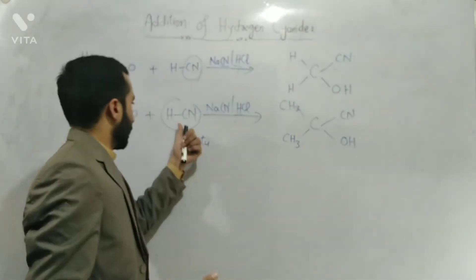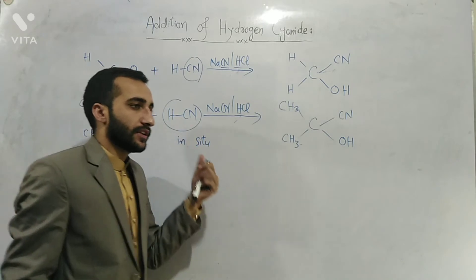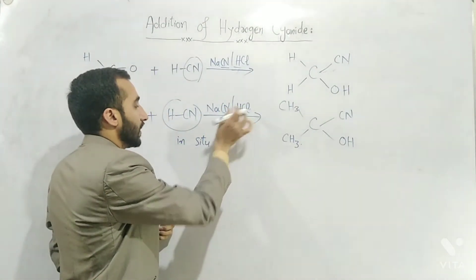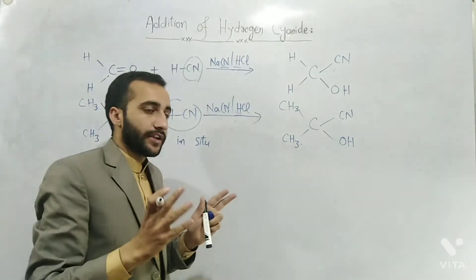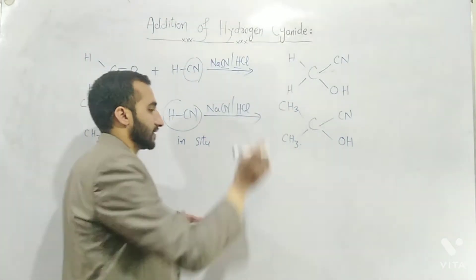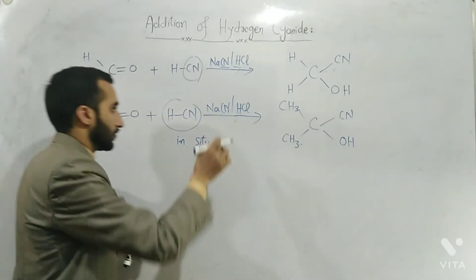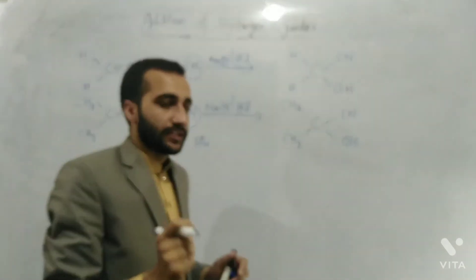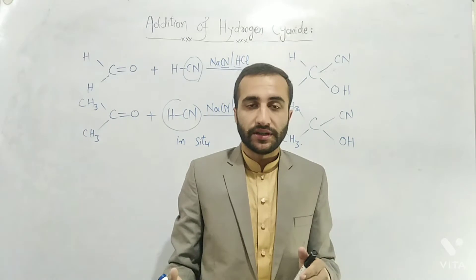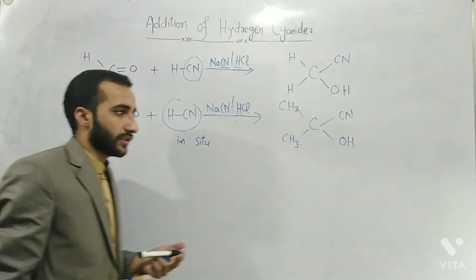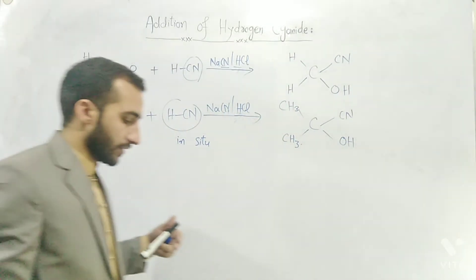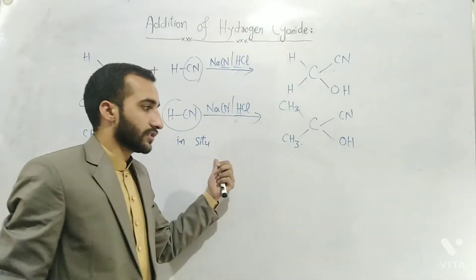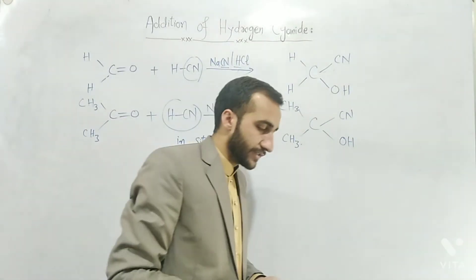HCN is not stable — it is unstable and is produced during the reaction. This is called 'in situ': a substance that is produced during the reaction itself. How do we do this? We add NaCN and HCl to the reaction mixture, and during the reaction, HCN is produced in situ. Otherwise, if used directly, HCN is unstable and can degrade.